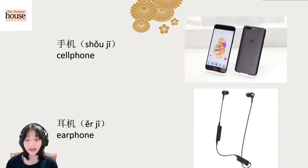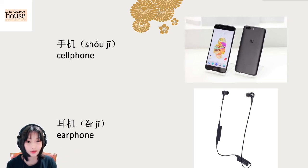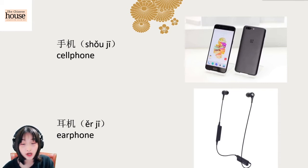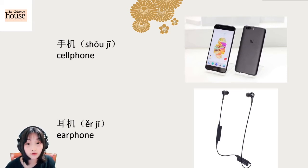So cell phone: 手機. 手 means hand, so a cell phone is a phone that you can put in your hands, that you can hold with your hand. 手機 — 手 is third tone. And here earphone: 耳機, 耳機, 耳機.